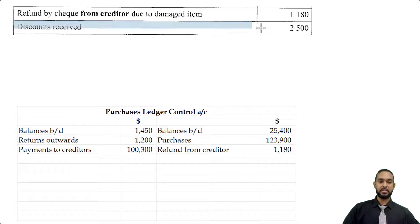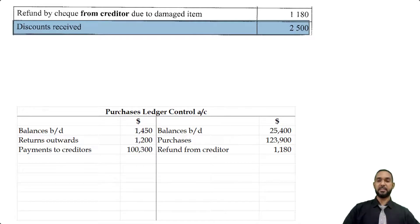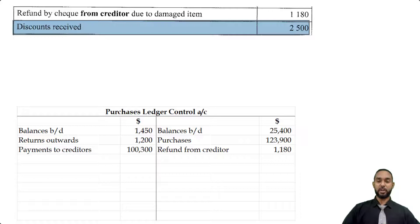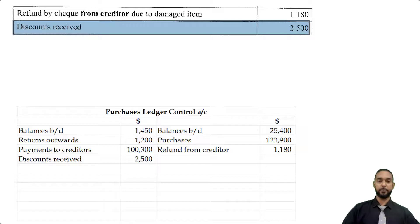I'm seeing discounts received. Discounts received is where our creditors reduce the amount that we have to pay them, encouraging us to pay faster. That's a literal reduction in the liability, which is recorded on the debit side of the liability account.